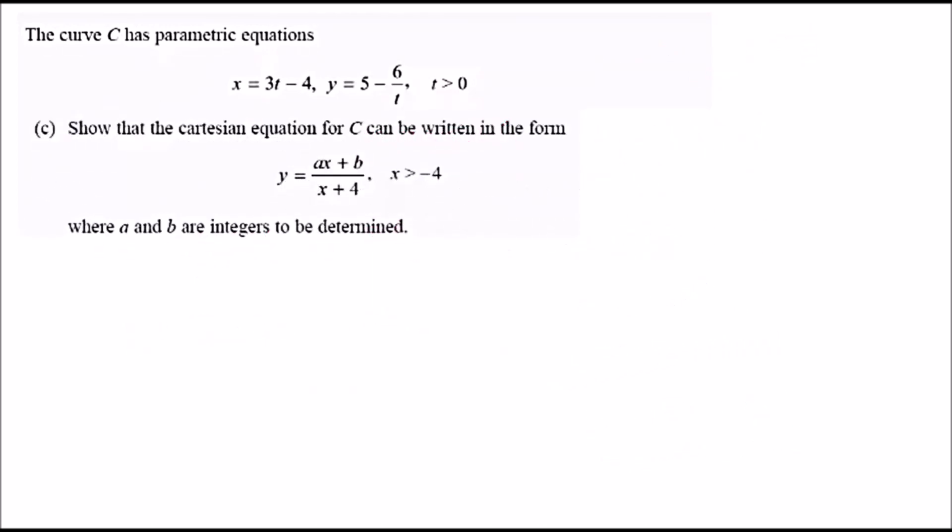Part c: show that the Cartesian equation for C, basically the above pair of equations, can be written in this format where y equals ax plus b over x plus 4, and a and b are integers. If we look at this carefully, you can notice there is no more t equation. A Cartesian equation is always in the form of x and y. This is telling us we need to somehow eliminate t.